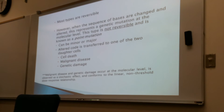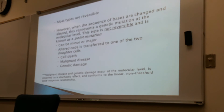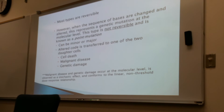Any time there's a change of the base — whether you lose a base, gain a different base, or flip the bases around — it's called a point mutation. It can be minor or major, but it's not reversible. As the cells divide and replicate, they carry that same broken information from daughter cell to daughter cell. We may not see this until later on — the stochastic effect. Malignant diseases and genetic damage occur at the molecular level, are observed as a stochastic effect, and conform to the linear non-threshold dose-response relationship, meaning no matter how low the dose, there will be an effect.